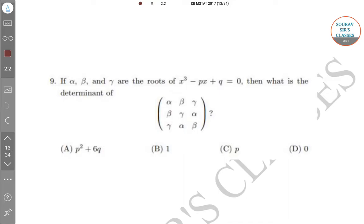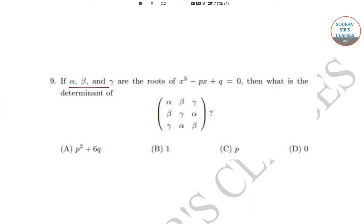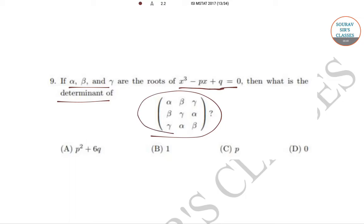In question number nine, it is given that alpha, beta, and gamma are the three roots of the equation x³ minus px plus q equals zero. We need to find the value of the determinant of a given matrix. Four options are given: p² plus 6q, 1, p, and 0. Let's solve this question.